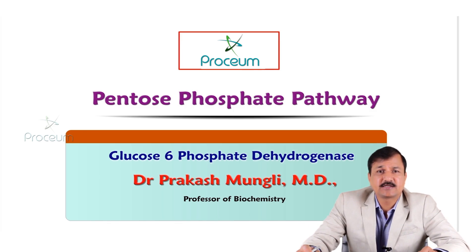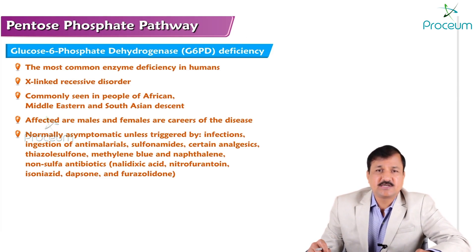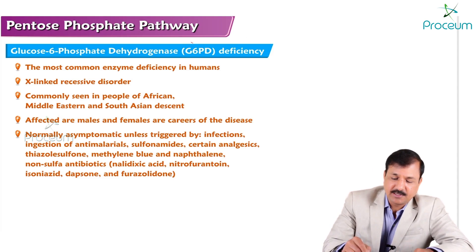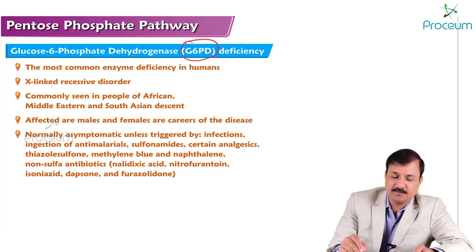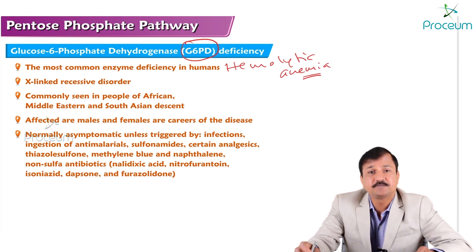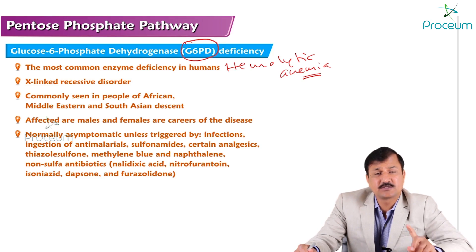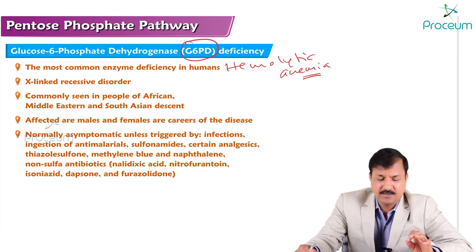Let us get into the details of this particular disease. Glucose-6-phosphate dehydrogenase deficiency, sometimes called G6PD deficiency, is the most common enzyme deficiency in humans leading to hemolytic anemia. The most common cause for enzyme deficiency-induced hemolytic anemia is glucose-6-phosphate dehydrogenase enzyme deficiency.